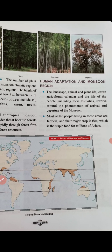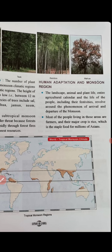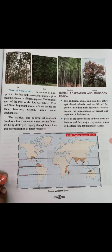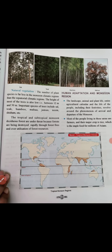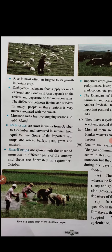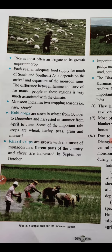Most people living in these areas are farmers, as there is adequate rainfall and good soil. Their major crop is rice, which is the staple food for millions of Asians. It is highly dependent on water. Adequate food supply for much of South and Southeast Asia depends on the arrival and departure of monsoon, and the difference between famine and survival is very much associated with the climate.